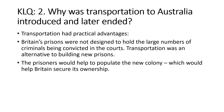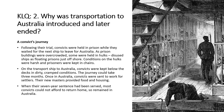Transportation had practical advantages. Britain's prisons were not designed to hold large numbers of criminals being convicted in the courts, so transportation was seen as an alternative to building new prisons. Also, the prisoners sent to Australia would help to populate the new colony, which would help to secure Britain's ownership. Britain needed people in Australia to claim it — there was little point claiming an empty wasteland. The convicts supplied this human need as workers and community builders.